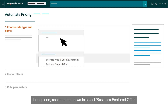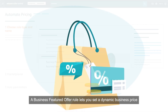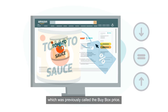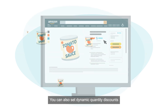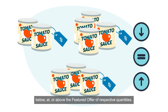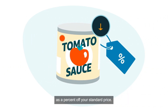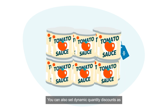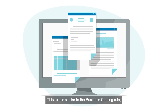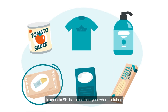In step one, use the drop-down to select Business Featured Offer or Business Price and Quantity Discounts as your rule type. A Business Featured Offer rule lets you set a dynamic business price below, at, or above the featured offer price (previously called the Buy Box price), and you can also set dynamic quantity discounts below, at, or above the featured offer of respective quantities. A Business Price and Quantity Discounts rule lets you set a dynamic business price as a percent off your standard price, with dynamic quantity discounts as percentages off your standard price. This rule is similar to the Business Catalog rule, but is created as a customized rule so that it can be applied to specific SKUs rather than your whole catalog.